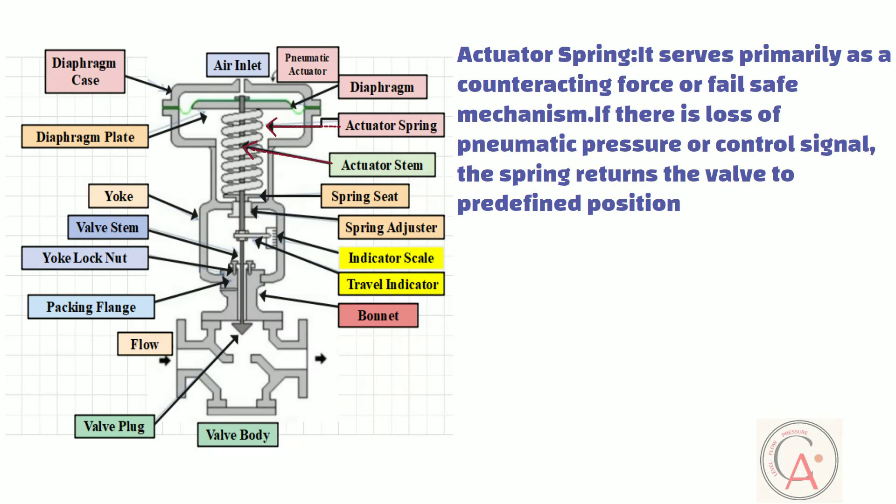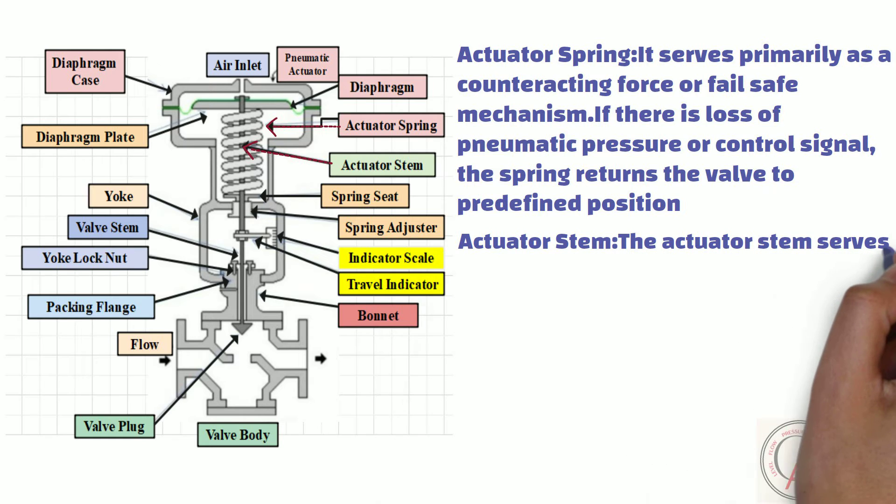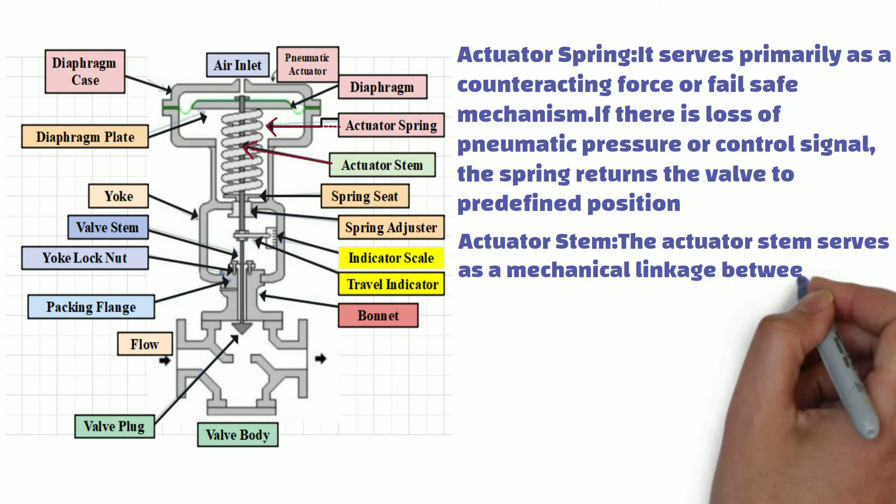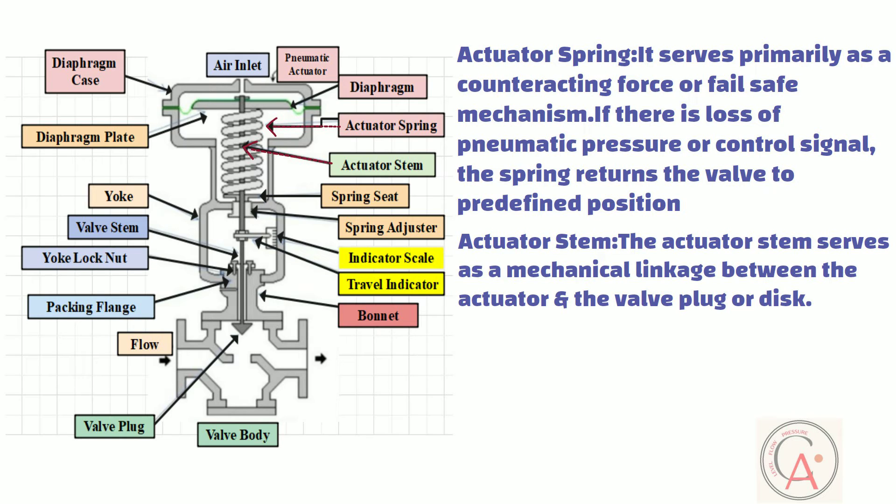This part is the actuator stem. The actuator stem serves as a mechanical linkage between the actuator and the valve plug or disc. When the actuator receives a pneumatic signal, it generates a mechanical force that is transferred through the actuator stem to move the valve plug or disc, thereby regulating the flow of fluid through the valve.